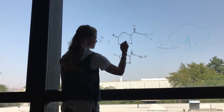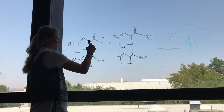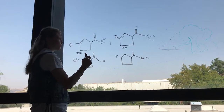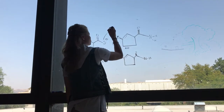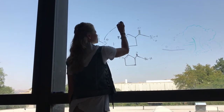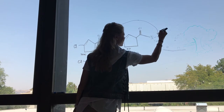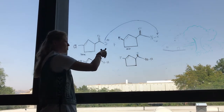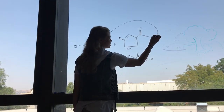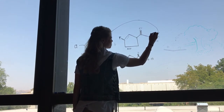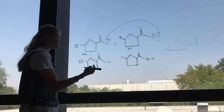One of the lone pairs on sulfur is going to come over and attack one of the hydrogens on nitrogen, bringing it over to the base. The bond between nitrogen and hydrogen is going to break as well, and there's going to be a new lone pair on nitrogen.